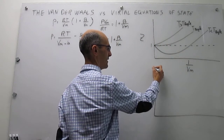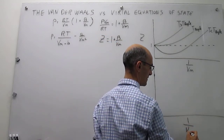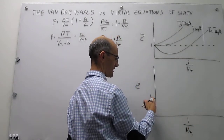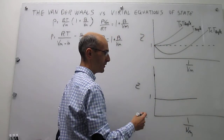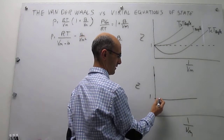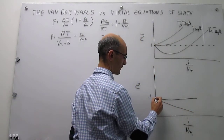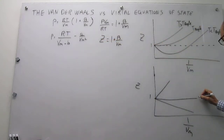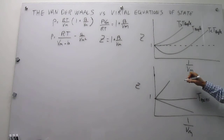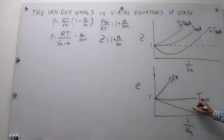We can trace this on a linear form with 1 over Vm on the axis. The ideal gas limit is a straight line. At the Boyle temperature, you get the line that follows ideal behavior. Below the Boyle temperature, attractions dominate, and above the Boyle temperature, repulsions dominate.